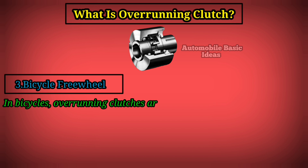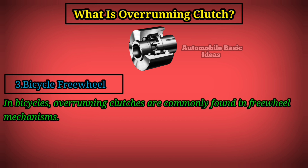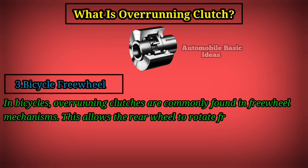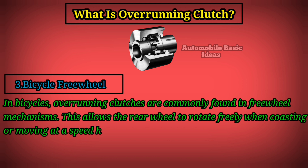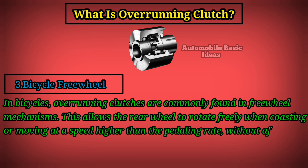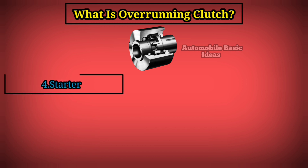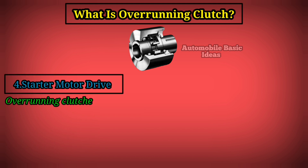Three, bicycle freewheel. In bicycles, overrunning clutches are commonly found in freewheel mechanisms. This allows the rear wheel to rotate freely when coasting or moving at a speed higher than the pedaling rate, without affecting the motion of the pedals.